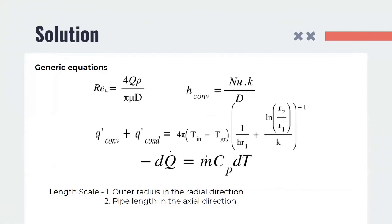This equation gives the relation between the Reynolds number and the volumetric flow rate of the fluid. The convective heat transfer coefficient can be found out using Nusselt number, thermal conductivity and the diameter of the pipe. This equation gives the relation between the total heat transfer rate per unit length through the pipe and the difference of the temperature between the inlet temperature and the ground temperature using the overall heat transfer coefficient. Finally, this equation gives the relation between the rate of heat transfer and the rate of change of temperature for the antifreeze solution. The length scales used in the problem are the outer radius in the radial direction and the pipe length in the axial direction.